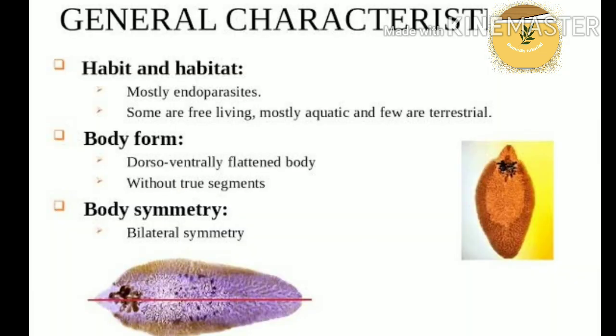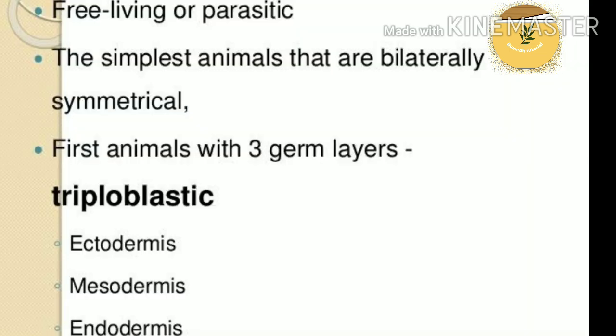General characteristics: Habit and habitat — mostly endoparasites, some are free-living; mostly aquatic and few are terrestrial. Body form — dorsoventrally flattened body without true segments. Body symmetry — bilaterally symmetrical, the simplest animals that are bilaterally symmetrical. First animals with three germ layers — triploblastic, with ectoderm, mesoderm, and endoderm.